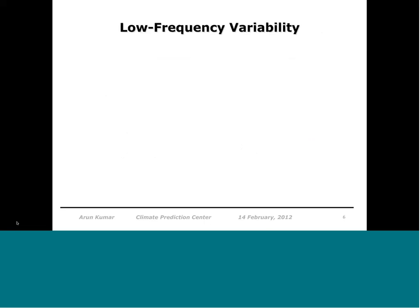Those two examples show synoptic scale features in the atmosphere and ocean are very well captured compared to independent analysis. Now there are a couple of examples on the low-frequency variability where you start to see some issues, either related to the ingestion of new data or related to stream boundaries.